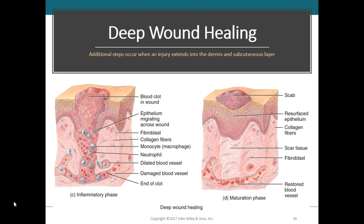Damaged blood vessels begin to regrow, and the tissue filling the wound during this phase is called granulation tissue. During the proliferative phase, there is extensive growth of epithelial cells beneath the scab, fibroblasts deposit more collagen fibers in random patterns, and new blood vessels begin to grow. During the maturation phase, the scab is sloughed off because the epidermis has been restored to its normal thickness.